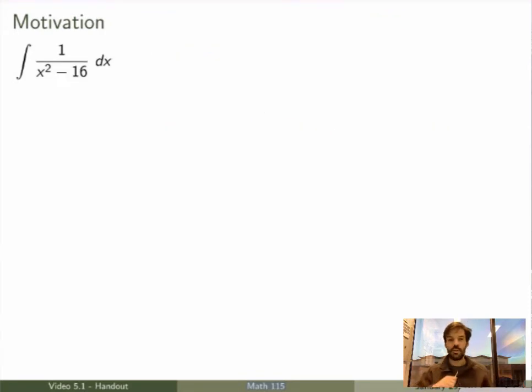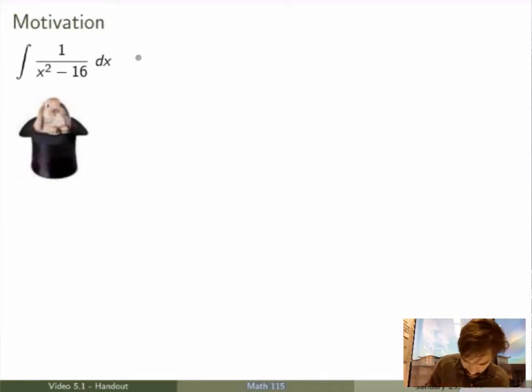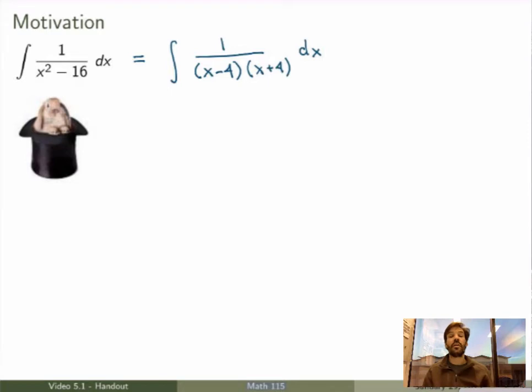Let me show you how. So what I'm going to do is pull a rabbit out of the hat and do a little bit of magic. Alright, so let me get started. So I'm just going to start by rewriting the denominator as a product of two linear factors. So x squared minus 16 is equal to x minus 4 times x plus 4. So far so good.